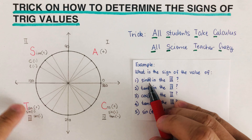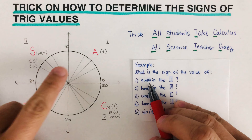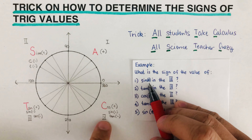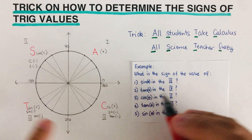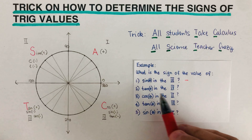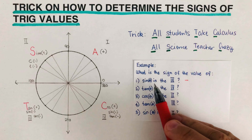Let's look at an example. What is the sign of sine theta in the third quadrant? The third quadrant is the third of the four quadrants, and on the third quadrant the sign of sine is negative.